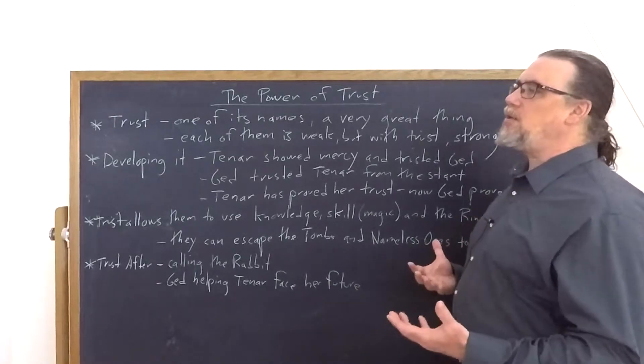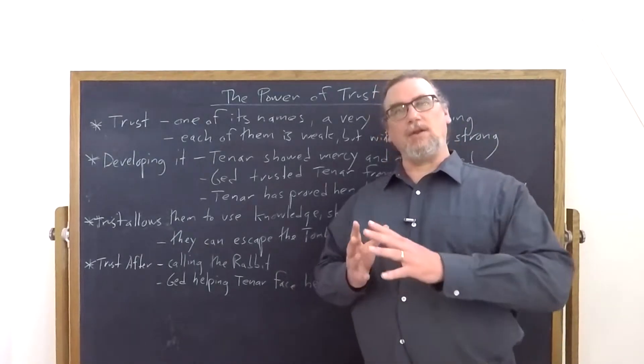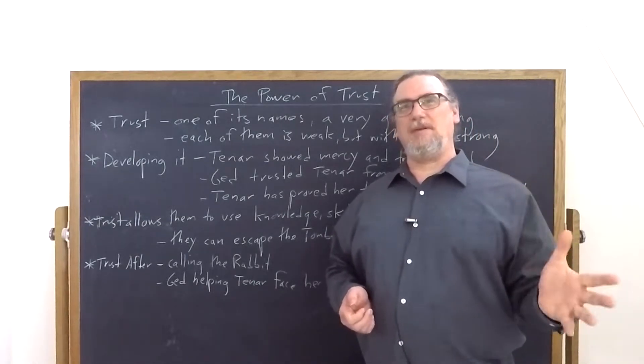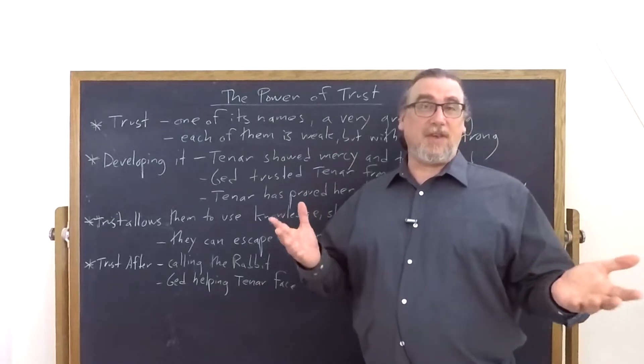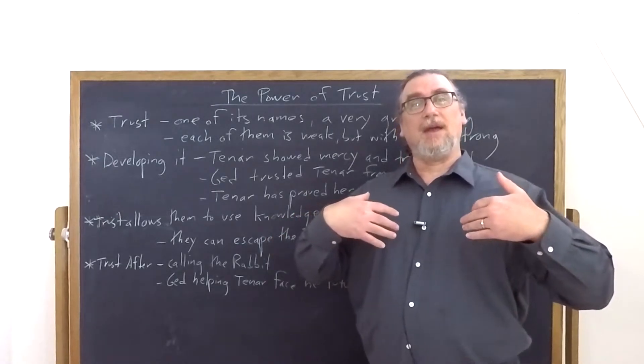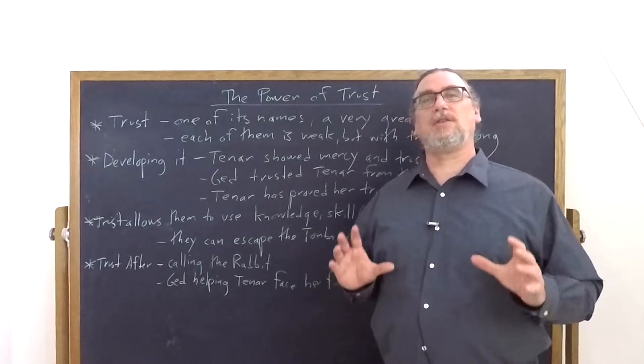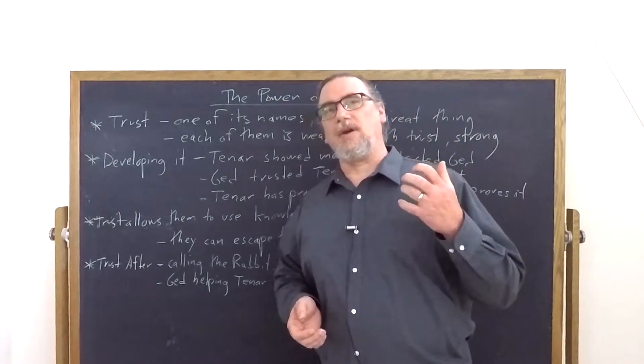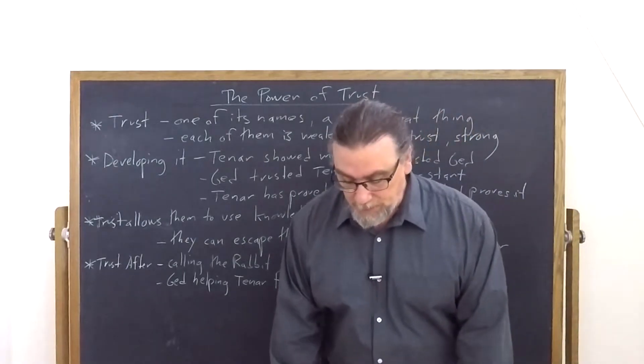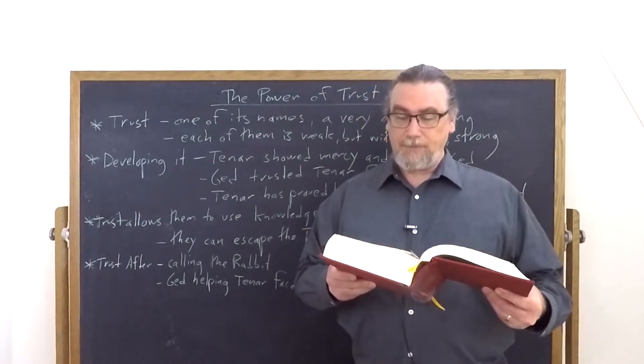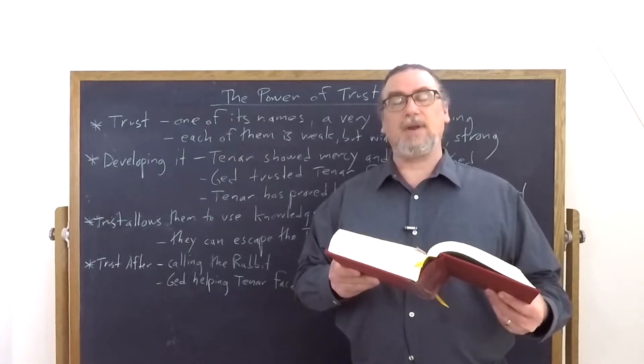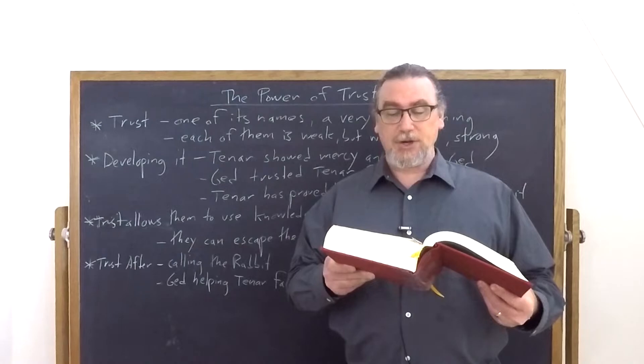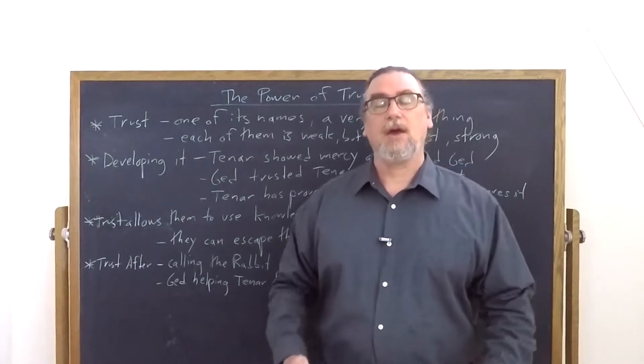And then Ged recounts how this developed and you can read backwards into the previous chapters to see this happening. They develop a closer and closer connection. They reveal more and more of themselves. It begins rather antagonistically as Ged himself says, I came here as a thief, an enemy armed against you. And she was as well, but she showed him mercy and trusted him.